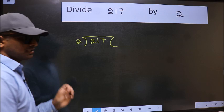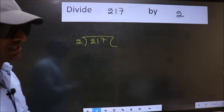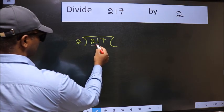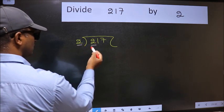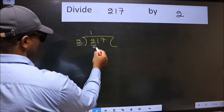This is your step 1. Next, here we have 2, here also 2. When do we get 2 in 2 table? 2 1s, 2.